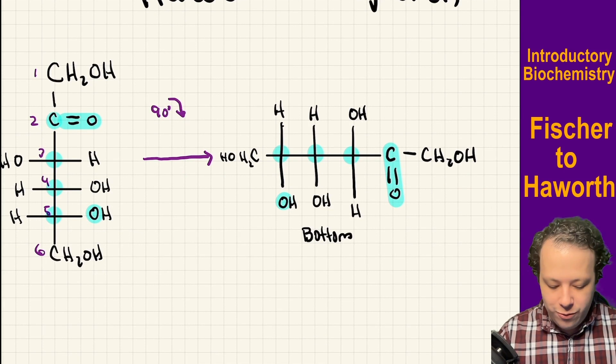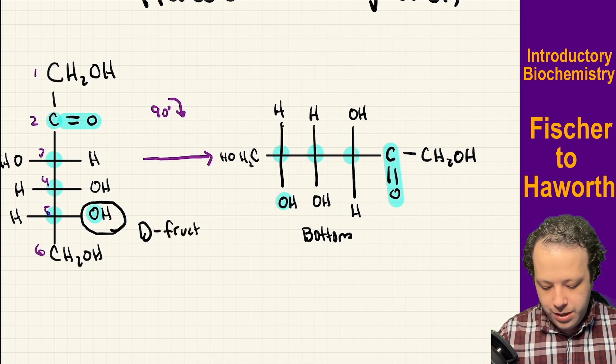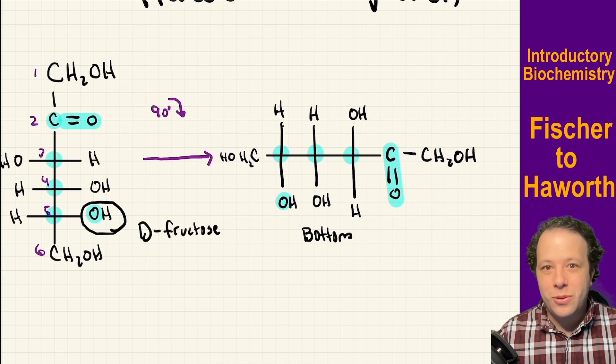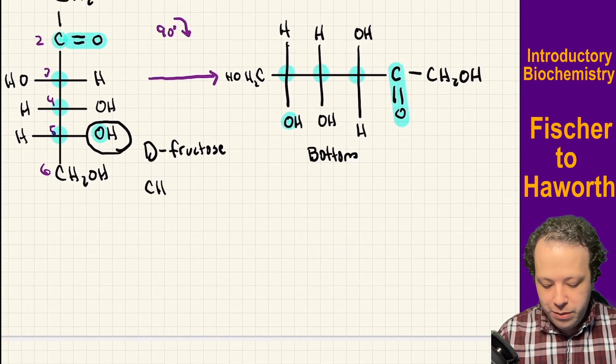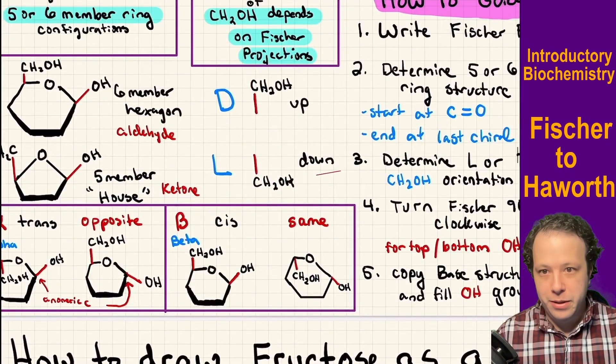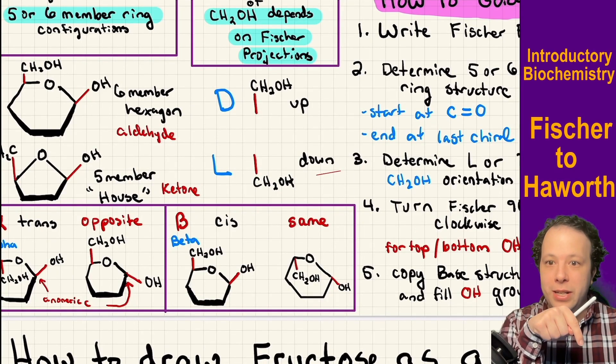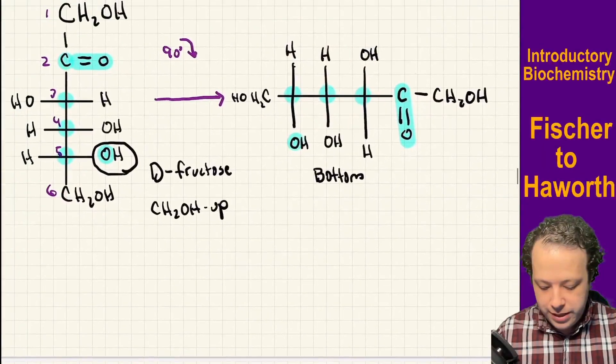Being that originally this structure is D-fructose, that means that on our house that we're going to draw, the CH2OH is going to be pointing up. Whenever it is D, CH2OH points up. If it was L, CH2OH points down. So with that, let's draw our basic house.